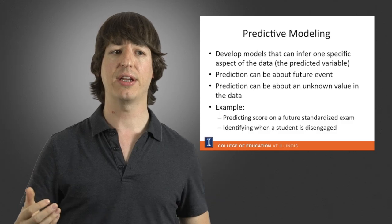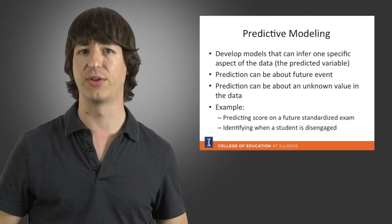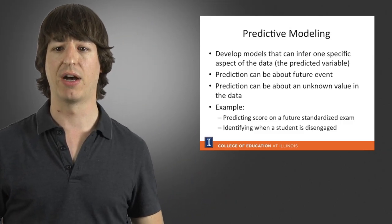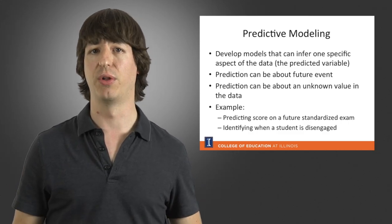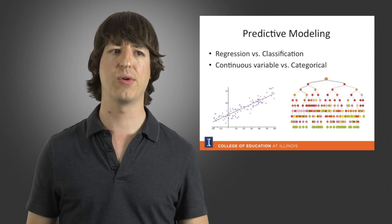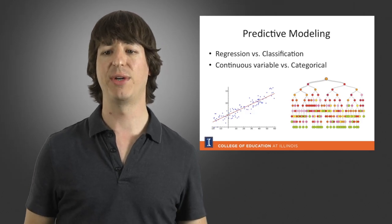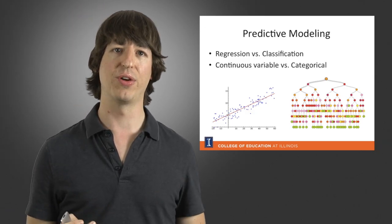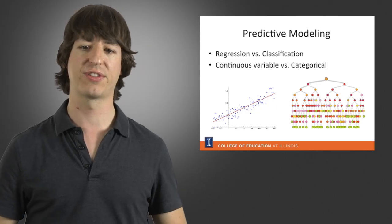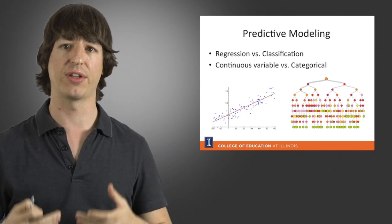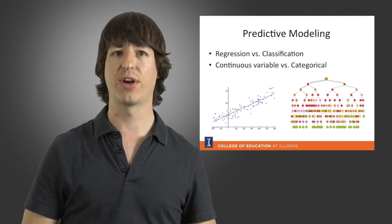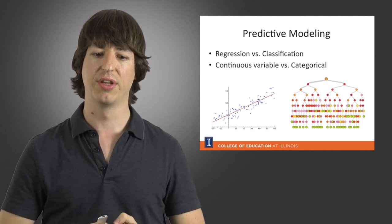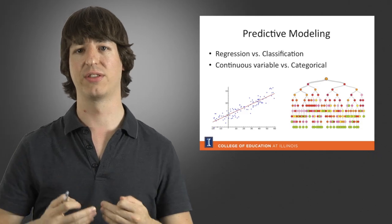For example, we might try to predict what the score of a student is going to be on a future standardized exam, or whether a student is disengaging from the learning environment at this moment. Regression and classification are very similar, and how they differ is in what type of data we're predicting. For regression, we're predicting continuous variables, such as a student's score on an exam. For classification, we're detecting and predicting categorical variables — for example, is the student currently disengaged or engaged?